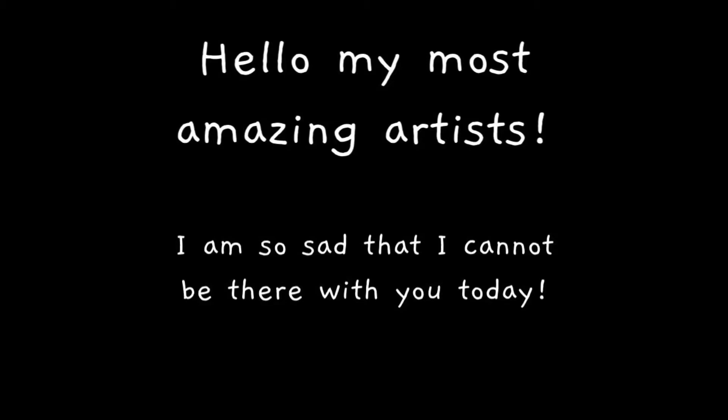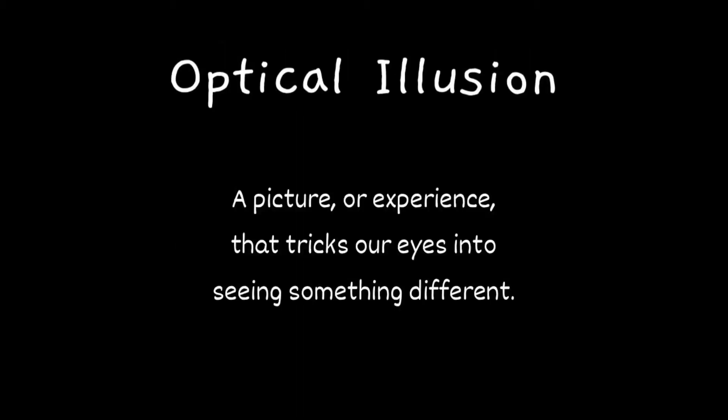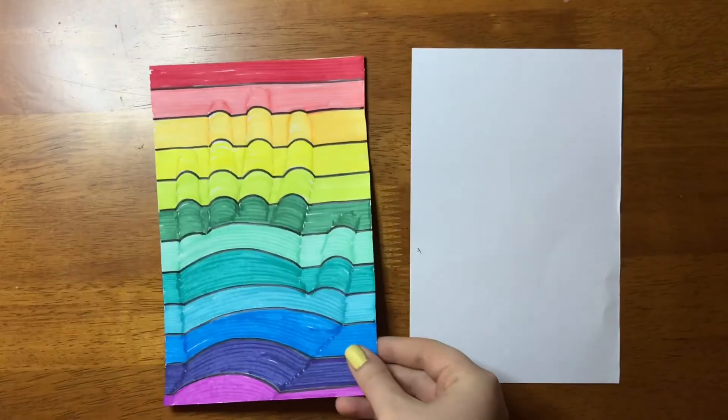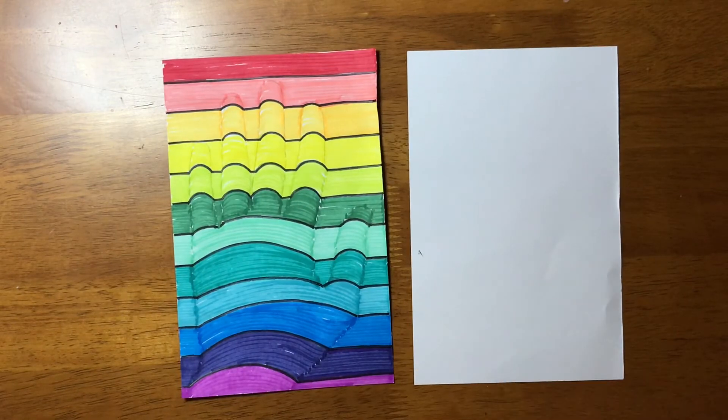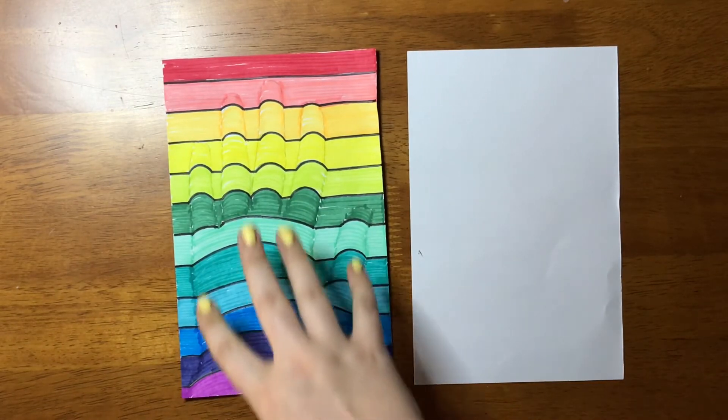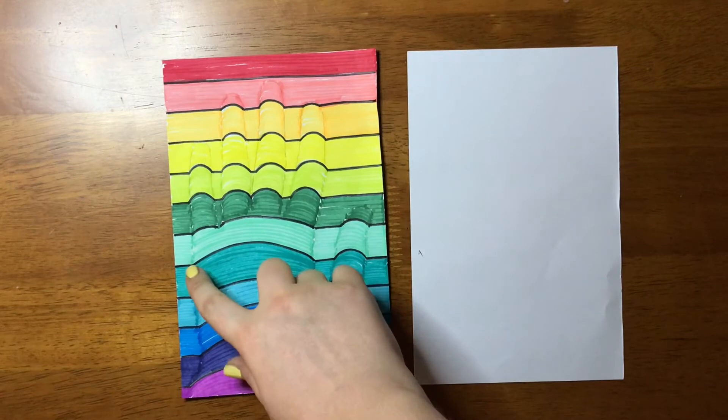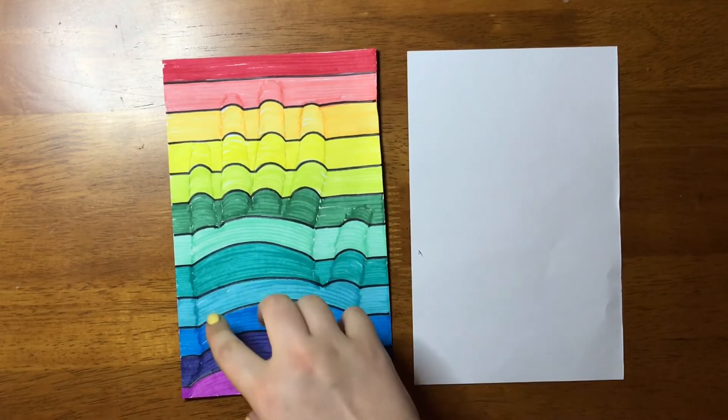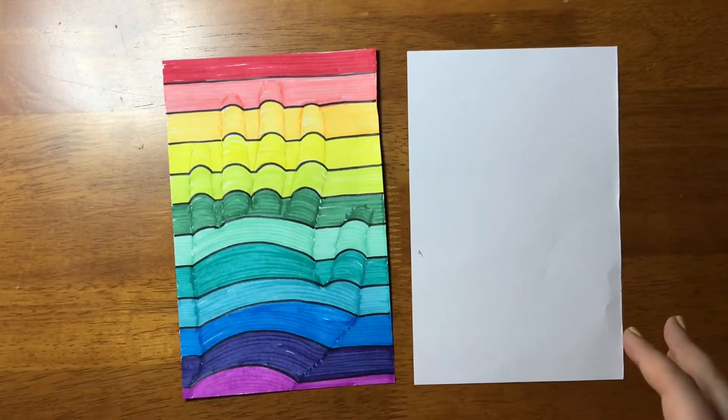The video you saw before this video is called an optical illusion. It's something that tricks the eye into thinking something different. Today we're going to be doing optical illusion hands. It's an optical illusion because these curvy lines over the hand make it look like it's popping out of the paper.